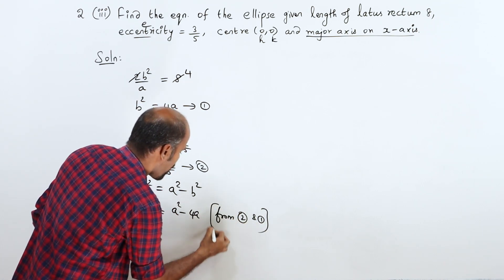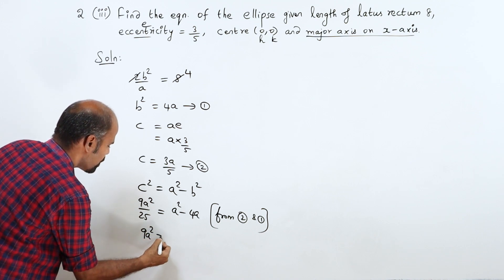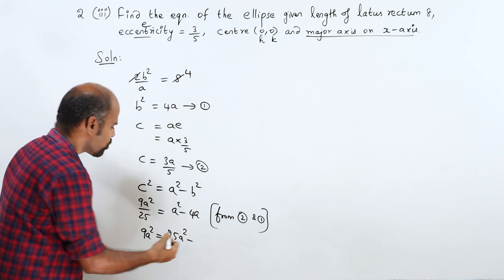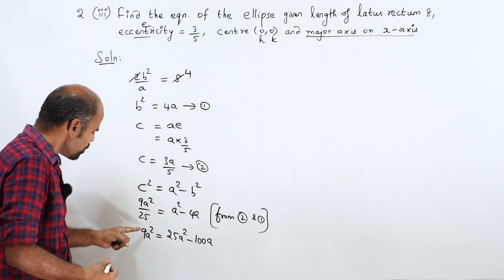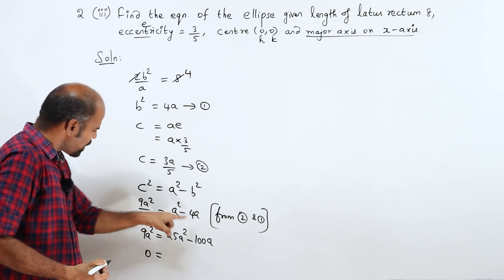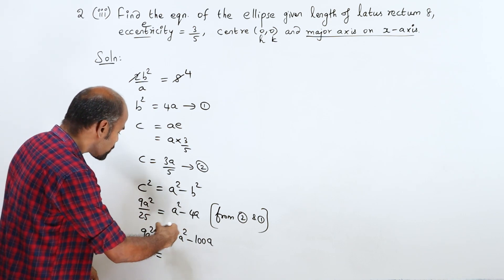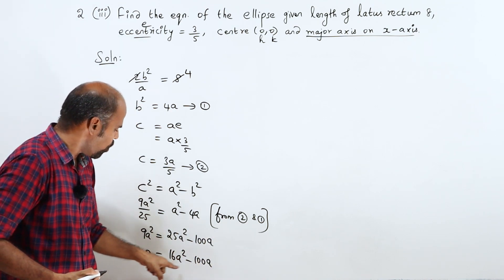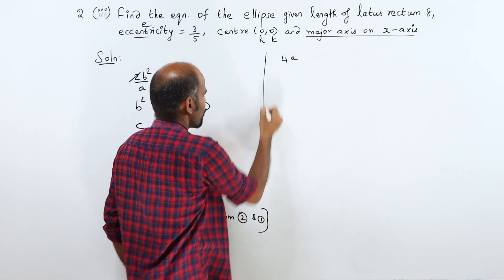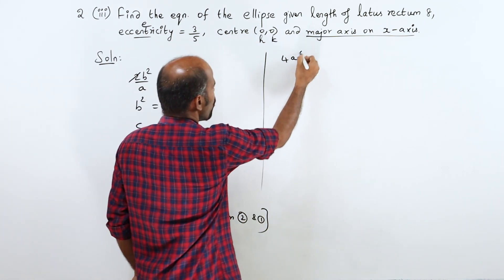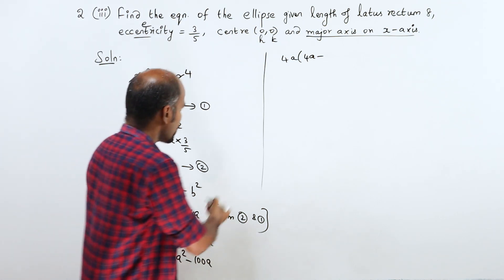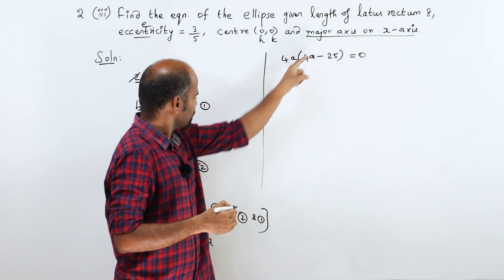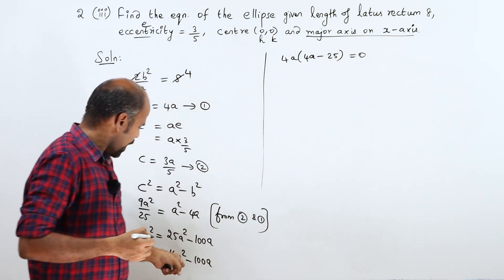From equations 2 and 1: 9A squared by 25 equals A squared minus 4A. Multiplying through by 25: 25A squared times A squared minus 4A times 25, giving 100A. So 9A squared minus 25A squared equals minus 100A, which gives 16A squared minus 100A. Factoring: 4A into 4A minus 25 equals 0.